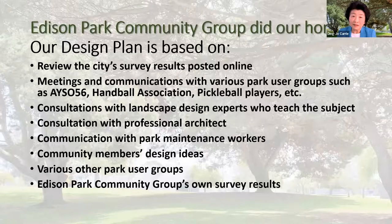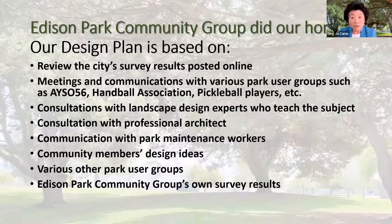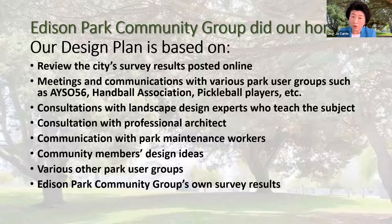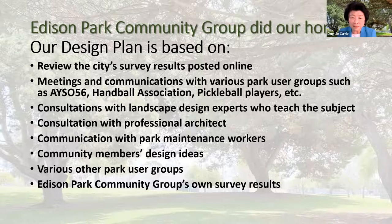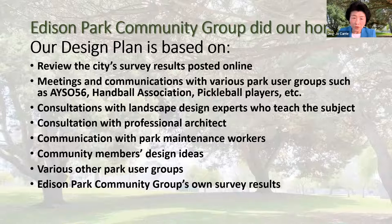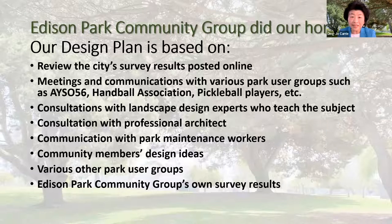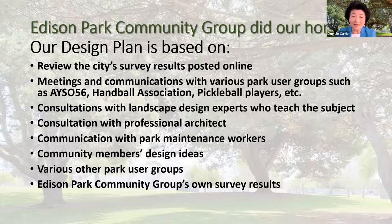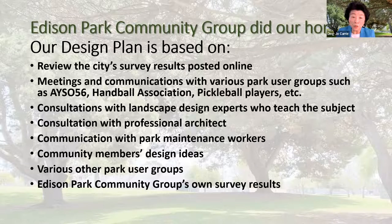It was crystal clear to the community that there was no genuine interest in listening to any ideas except to defend RJM's original Conceptual Plan C. It was then that the Edison Park Community Group decided we must put forward an alternative plan to the city's Conceptual Plan C. We want to demonstrate that with intentionality, openness, thoughtfulness, and true professional design skills, we can be responsive and responsible when redesigning parks for the community.